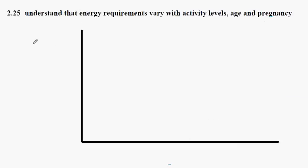GCSE Biology, syllabus statement 2.25. Here we're understanding that energy requirements vary with activity level, age and pregnancy, three different factors.